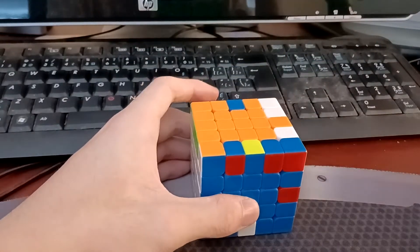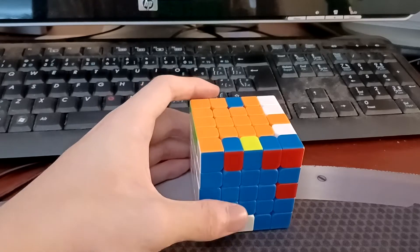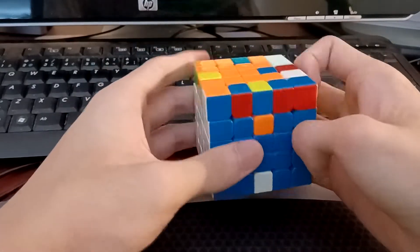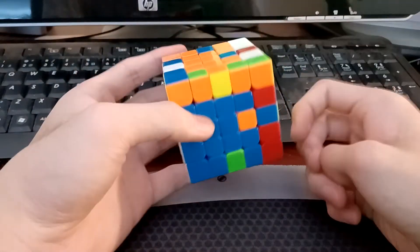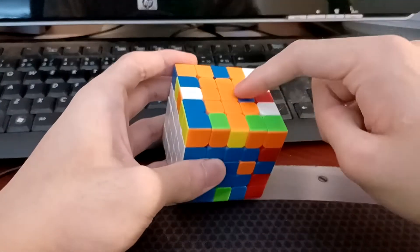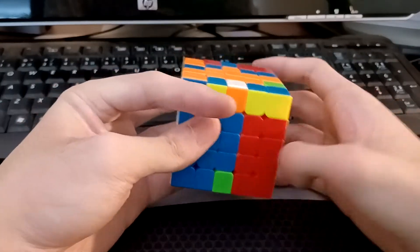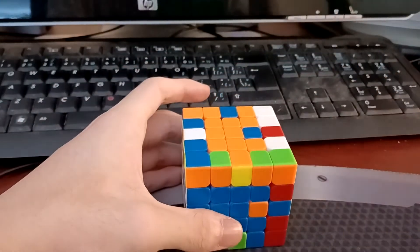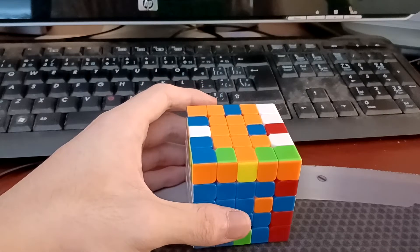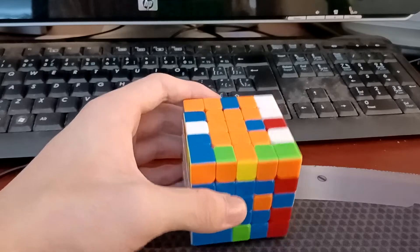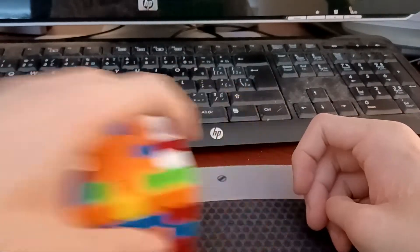And basically, you can cancel into a commutator anytime, but whenever your solution pushes this piece out of the top layer with the first move, if that makes any sense. I talked about this in a 6x6 video about a year ago when I did this playlist. You can check that out.